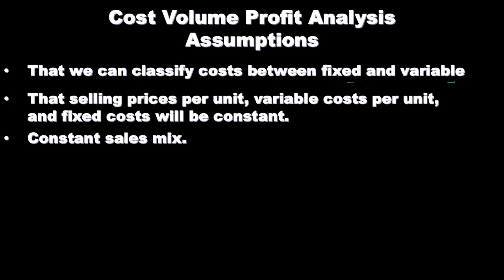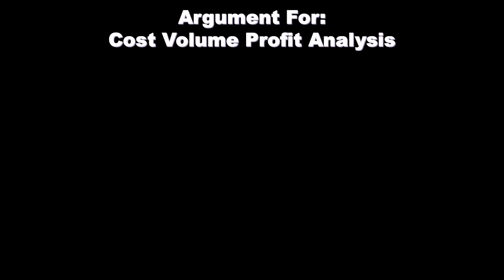We also assume a constant sales mix. When we have different inventory items and apply CVP analysis, we assume a constant ratio at which we sell our inventory so we can apply a systematic numerical method. The sales mix changing could be a significant factor — we might sell a lot more of one product than another, and if we don't know what the sales mix is, it becomes difficult to assume a consistent sales mix for the cost volume profit analysis.